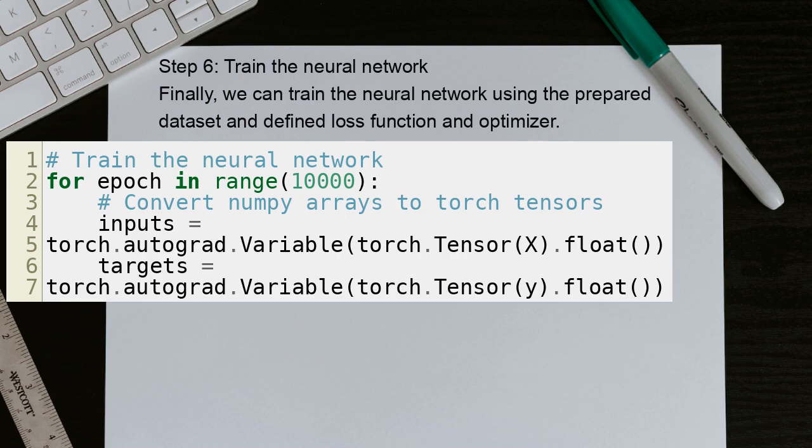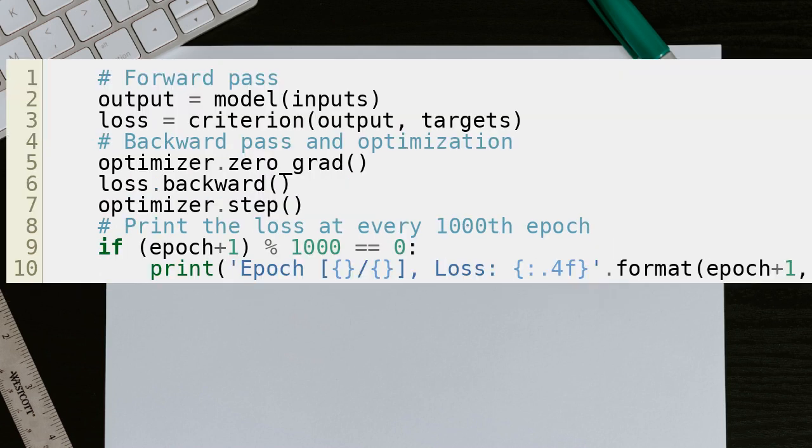Step 6: Train the neural network. Finally, we can train the neural network using the prepared dataset and defined loss function and optimizer. And here is the rest of the code. Let's continue.